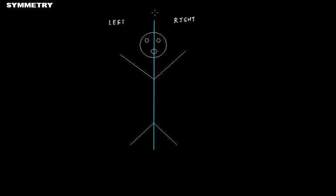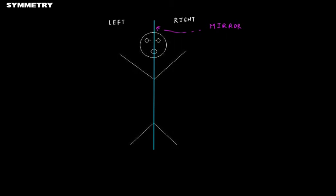Now we have divided this figure using this line into a right half and a left half. Imagine that we have a mirror on this line. When you are trying to look at the right side of this figure in the mirror, the mirror image will be exactly the left portion of this figure.